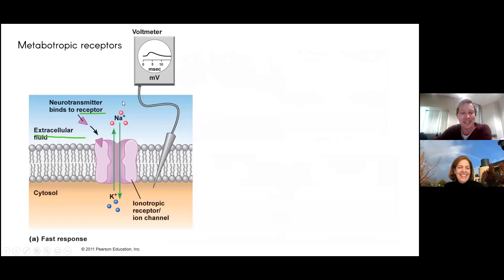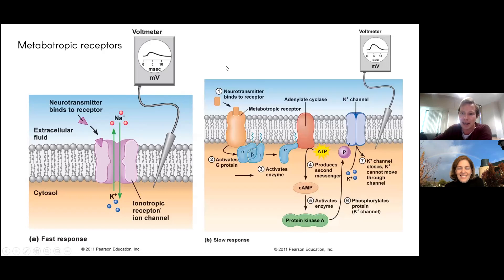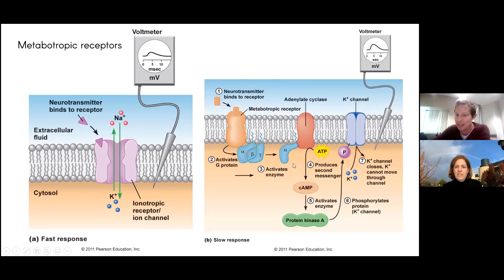Metabotropic receptors are another type — compared to ion channels that receive ligands and conduct ions, metabotropic receptors simply receive the ligand but do not involve conductance of any ions. Instead, they cause internal signaling pathways — enzymes acting on other enzymes — producing a secondary messenger molecule that phosphorylates or transfers energy to a potassium channel and opens the gate. So even though there's no direct ion flow at the receptor, secondary messaging indirectly opens another ion channel. These are called metabotropic receptors and, as shown by the voltmeter schematic, they're a little slower than traditional ionic responses, but can be just as strong if not stronger.